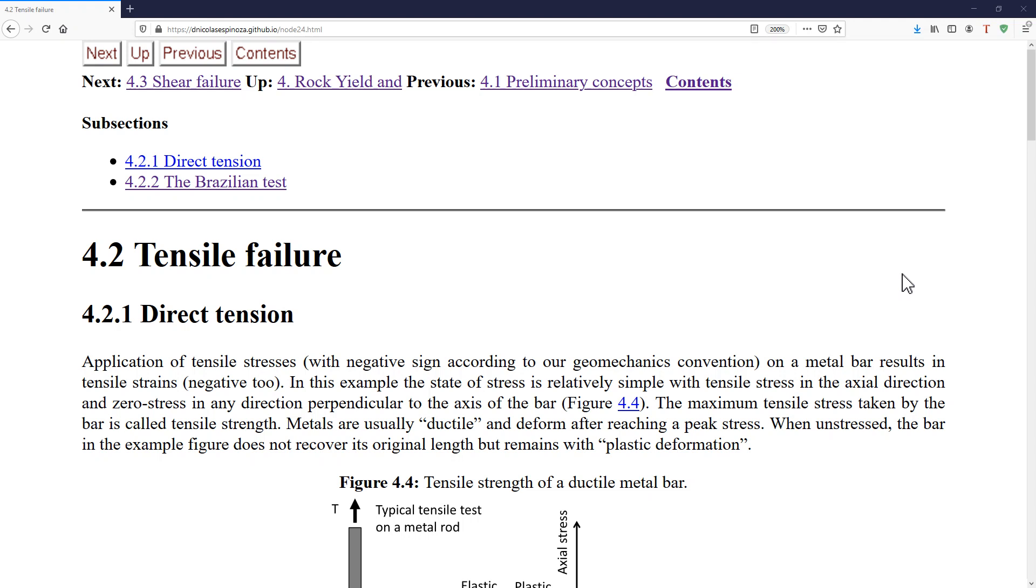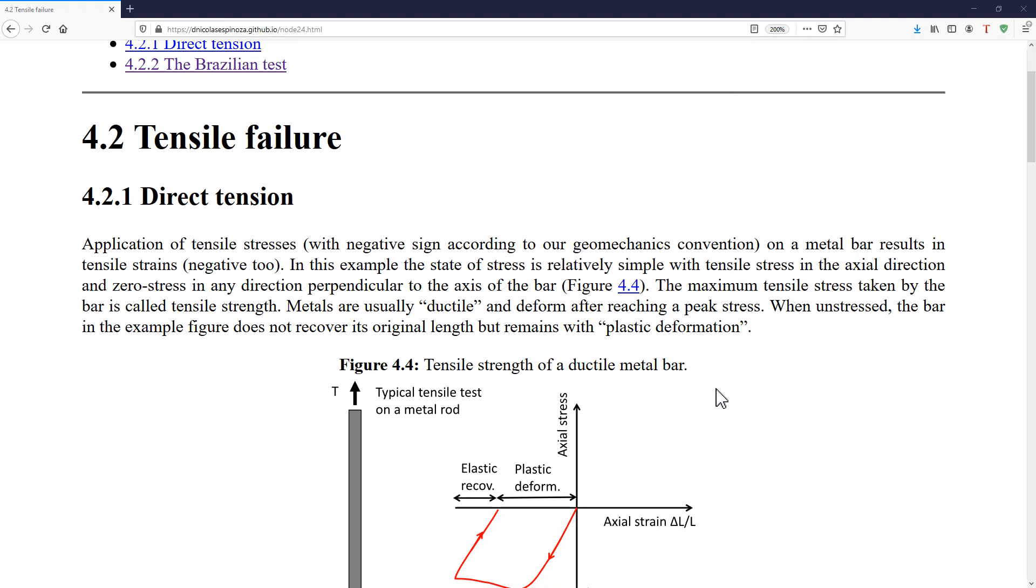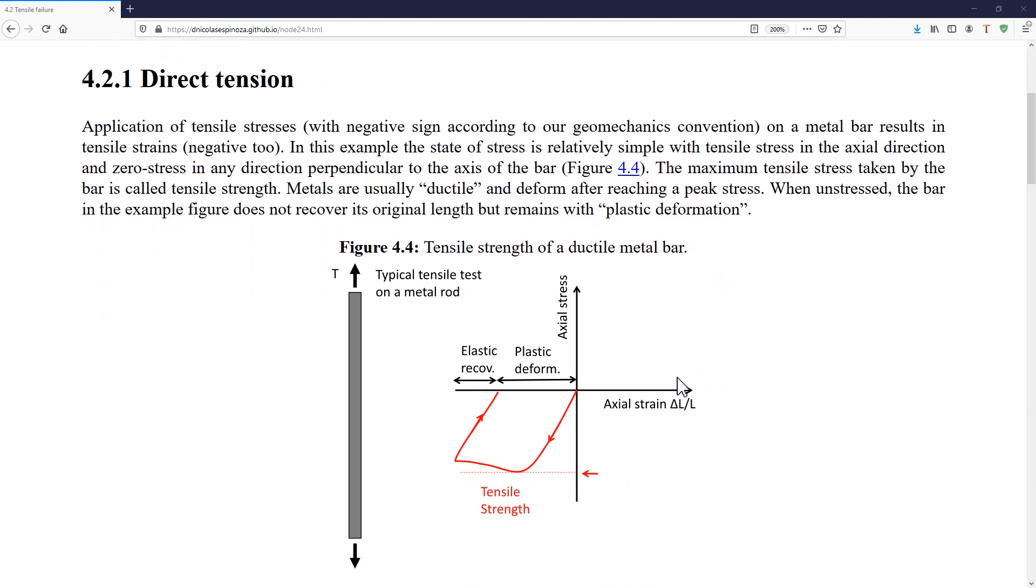The first type of failure that we're going to see is tensile failure. Tensile failure occurs when you apply tensile stresses to a solid.